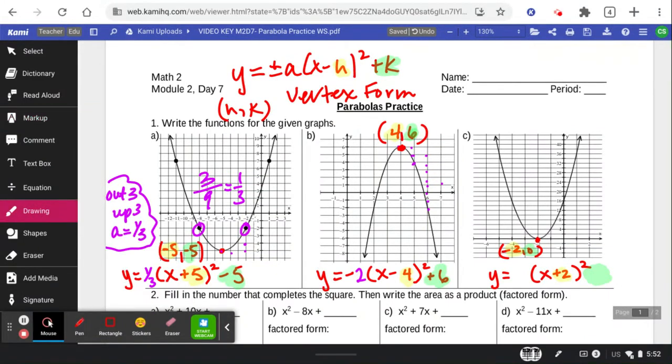For my A value, this goes out 1. I just noticed these are counting by 2's on the y-axis. Do you see that? 2, 4, 6, 8. So this goes right, out 1, up 2, 4. Out 2, up 2, 4, 6, 8, 10, 12, 14, 16.